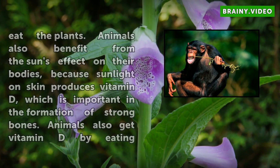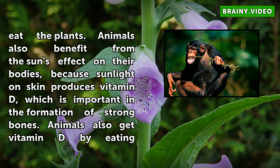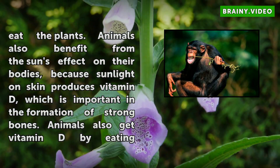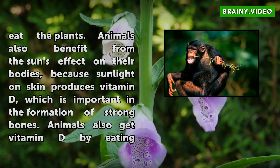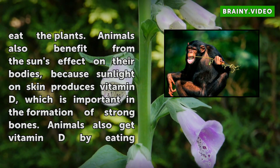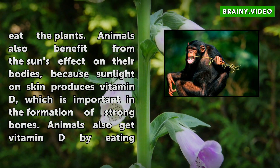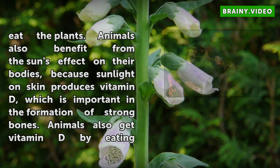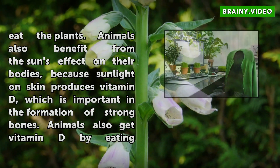Animals also benefit from the sun's effect on their bodies, because sunlight on skin produces vitamin D, which is important in the formation of strong bones. Animals also get vitamin D by eating plants.